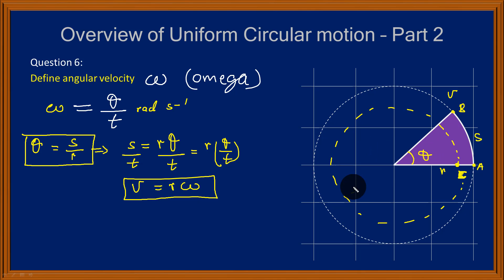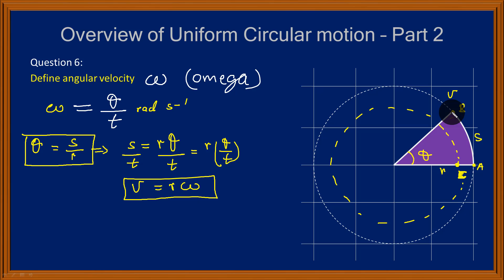Think about a spinning disc or the wheel of a grinder. There are particles near the circumference and particles near the center. Those near the circumference will have a higher speed than those near the center. They will have different values of v but the same value of omega.